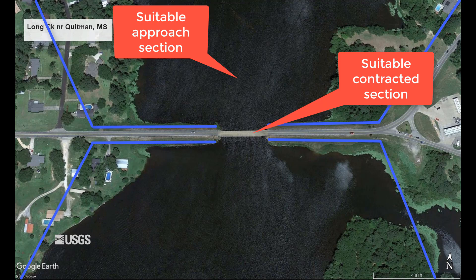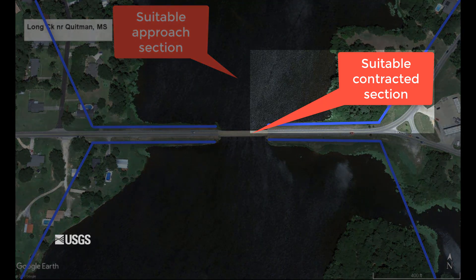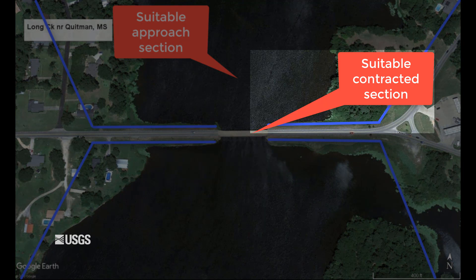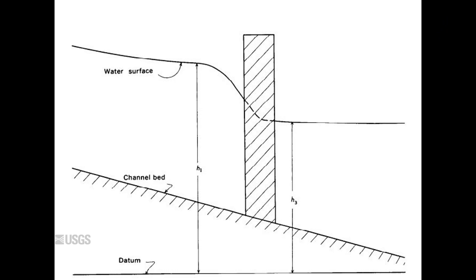First, let's talk about the contracted section, also known in practice as section three. While there are special cases when various natural features, such as rock constrictions, can be treated as contracted openings, the most common — and the openings I will be referring to in this video — are bridge or roadway contracted openings. For this type of indirect, the contracted section is acting as our measurement device.